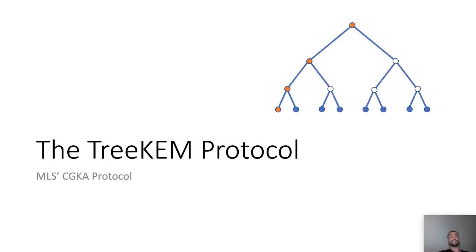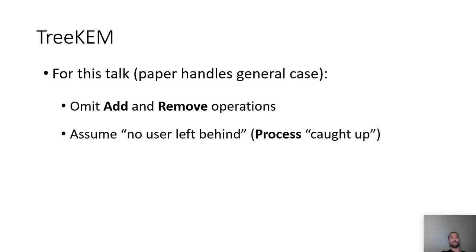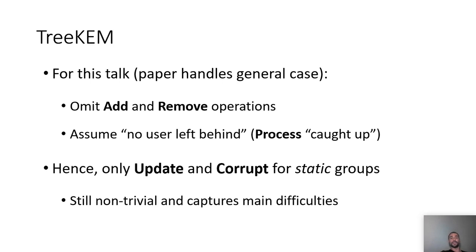Now I will present the CGKA protocol proposed by MLS, called TreeKEM. TreeKEM was initially proposed in the MLS mailing list in 2018, and is based on early work on asynchronous ratcheting trees. The packet size is O(log N). There is also subsequent work: causal TreeKEM, tainted TreeKEM, and actively secure CGKA, which is a completely different protocol. For this talk I will omit add and remove operations and assume no user is left behind, meaning all users instantly process all control messages. Our paper handles the general case. We only focus on update and corrupt operations for static groups — and as we will see, this is still non-trivial and captures the main difficulties.